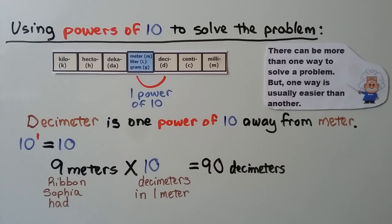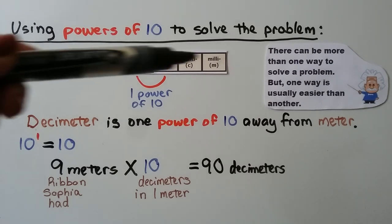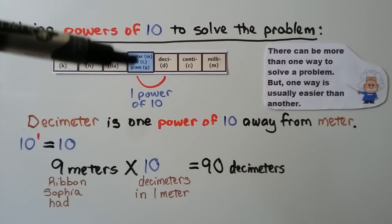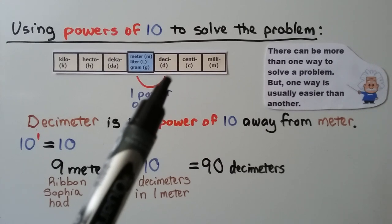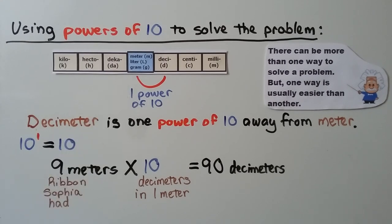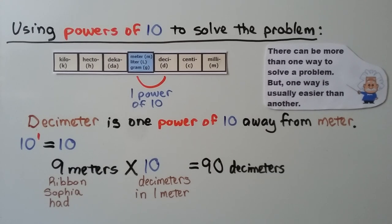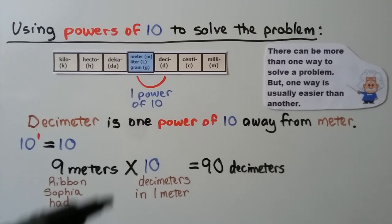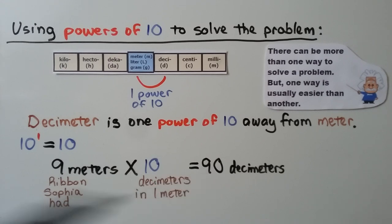Using powers of ten to solve the problem: our strip shows the base units of meter, liter, and gram. Decimeter is one power of ten away from meter — ten to the first power equals ten. We do the nine meters Sophia had times ten decimeters in one meter, giving us ninety decimeters.